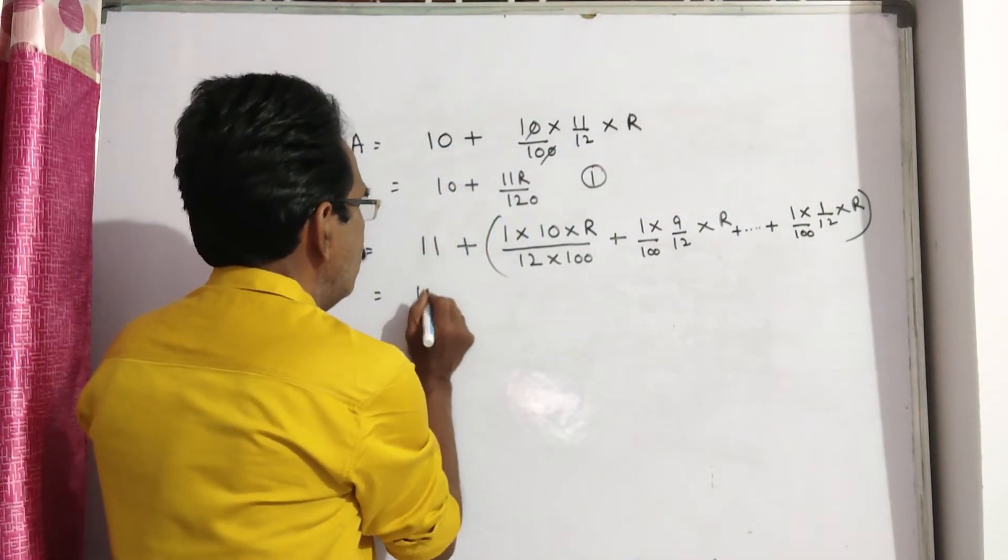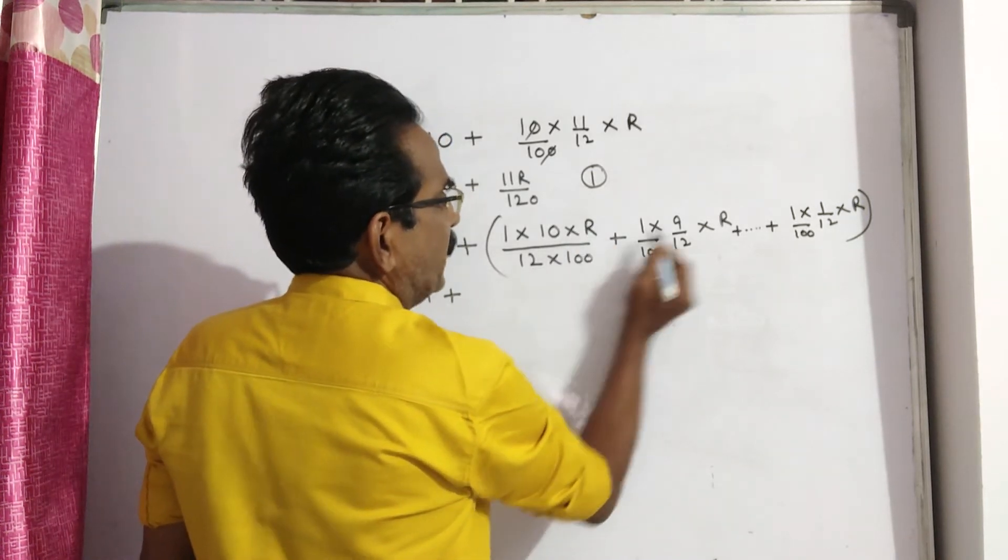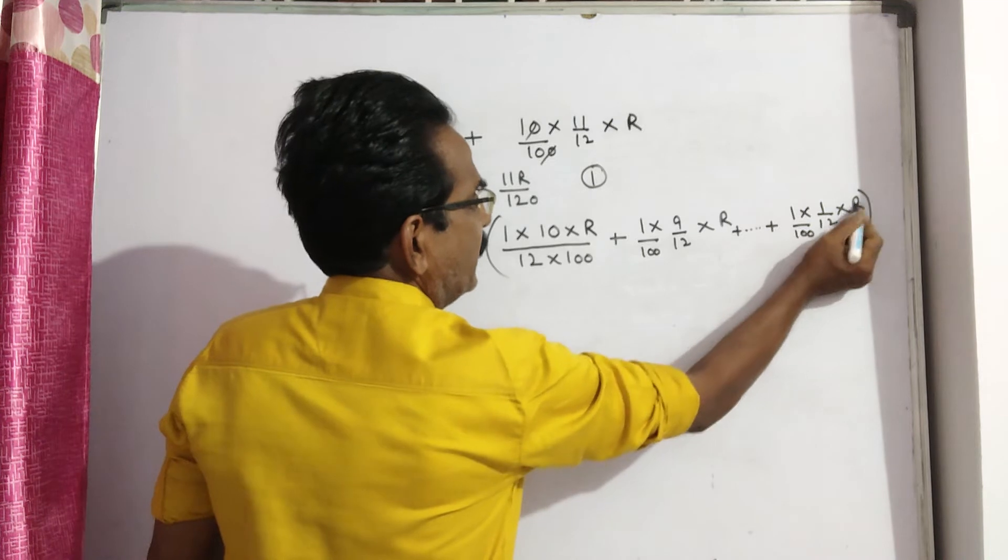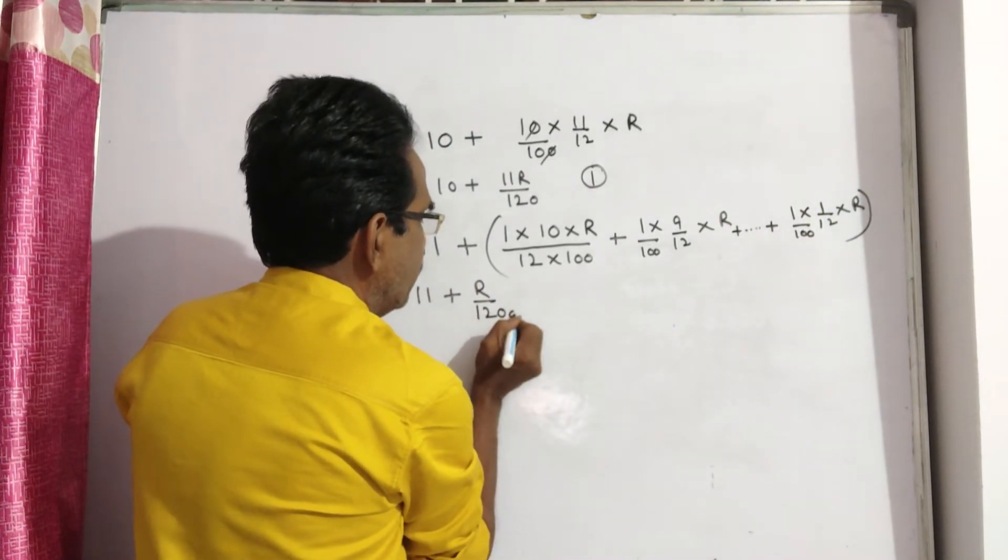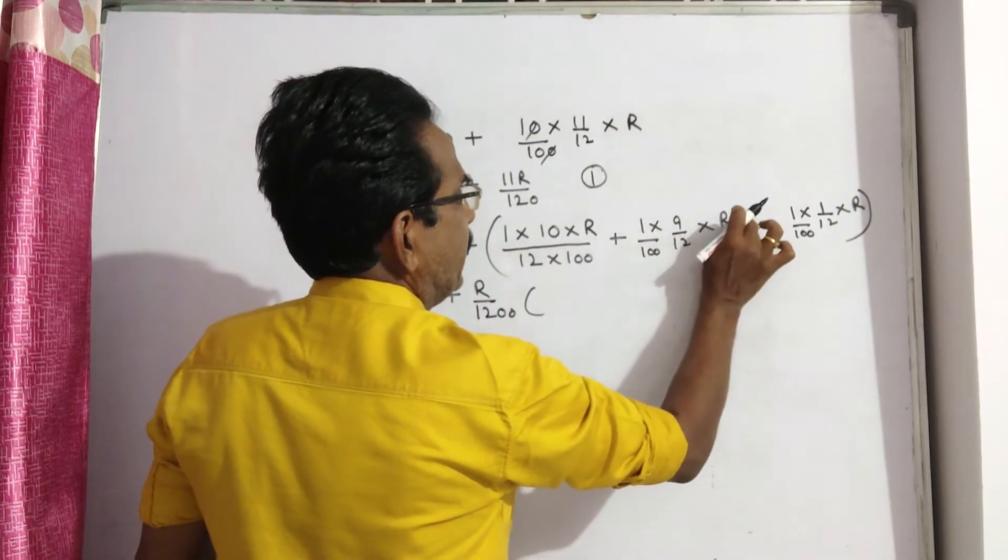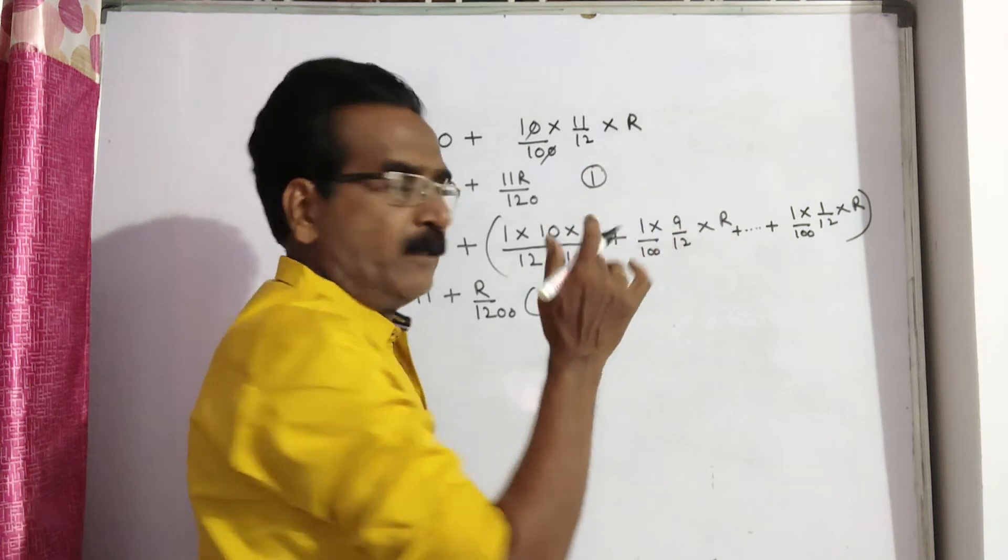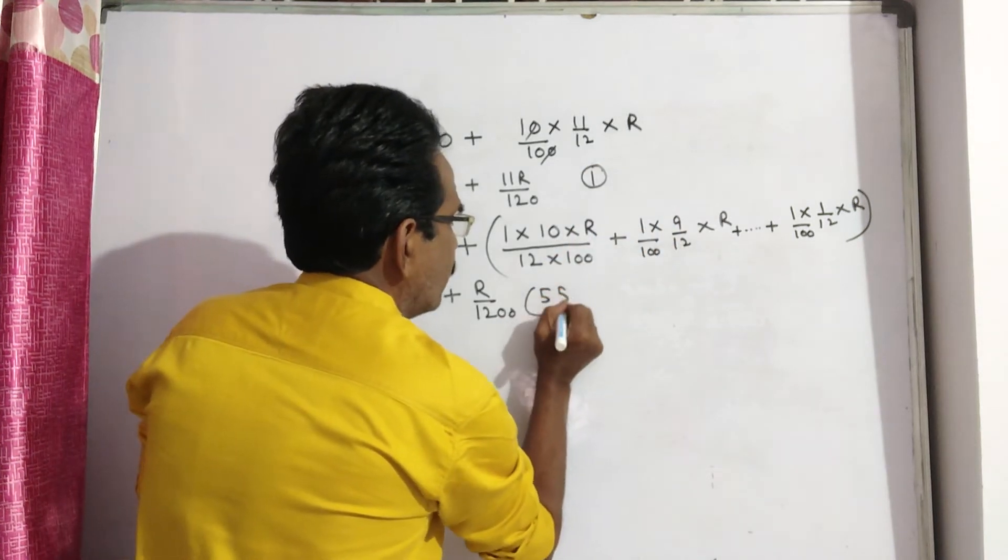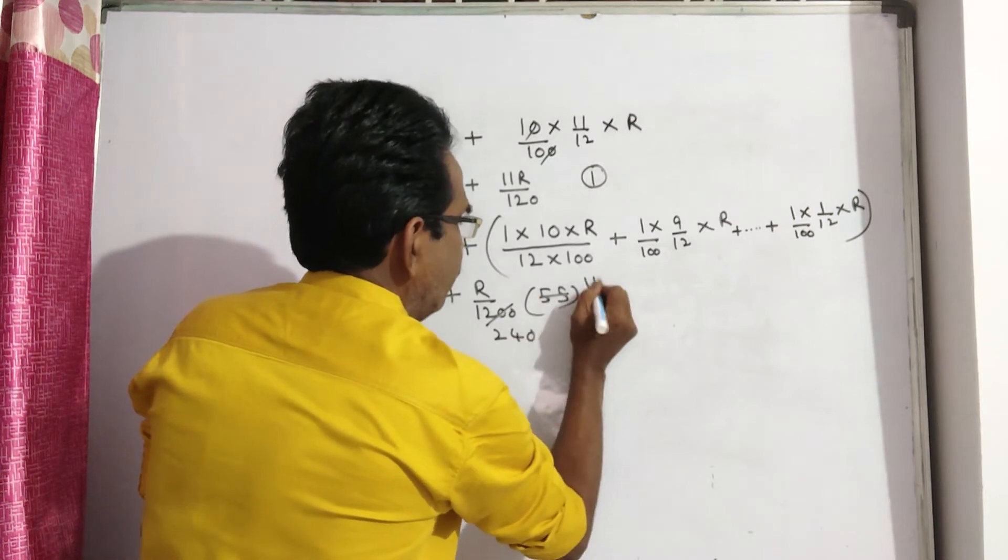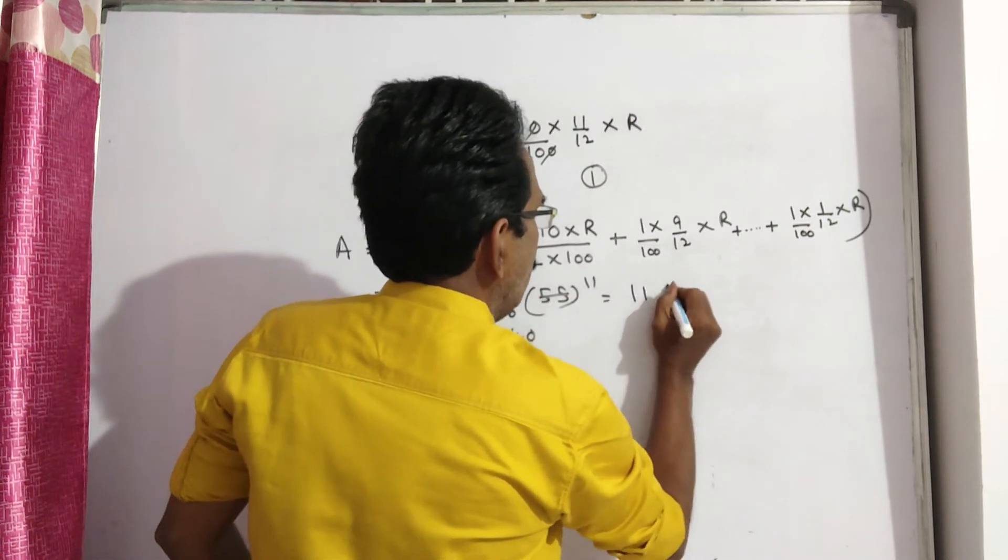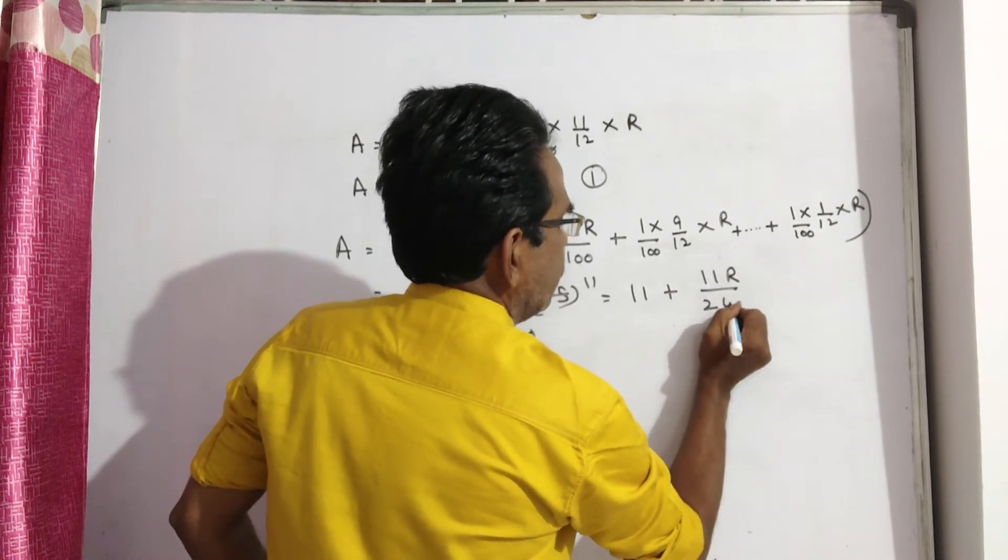This is equal to 11 plus R by 1200 into (10 plus 9 plus 8 plus so on up to 1). The sum from 10 to 1 is 10 into 11 by 2, which equals 55. So this equals 11 plus 11R by 240.